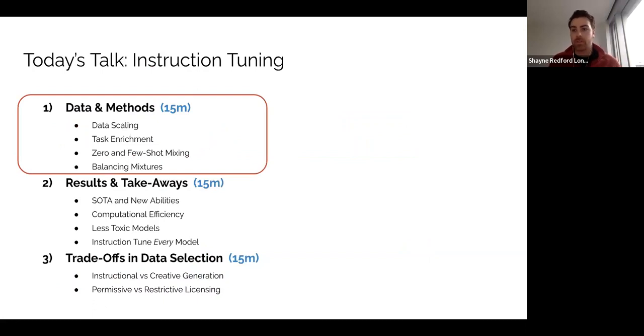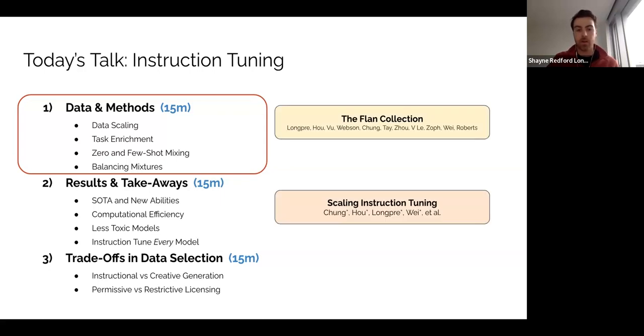and emergent abilities with my colleagues at Google. So this is a talk in three parts, but this recording is only covering the first part on data and methods, which is a collection of results from two papers, the FLAN Collection and Scaling Instruction Tuning, which released scripts to generate the FLAN Collection dataset and also the FLAN T5 models released in this work, and then results in FLAN PaLM, which is a Google internal model, which unfortunately couldn't be released.